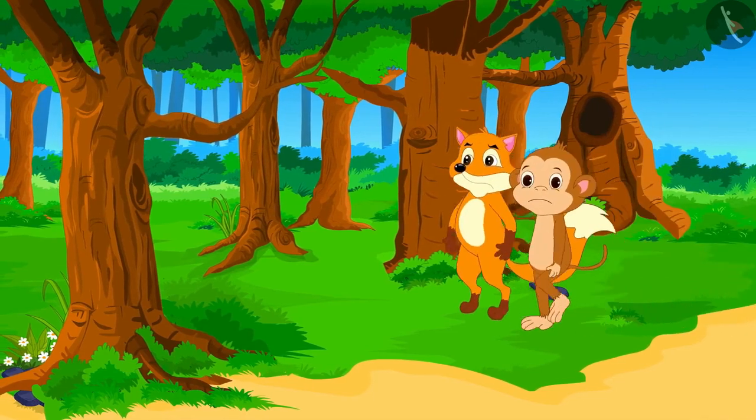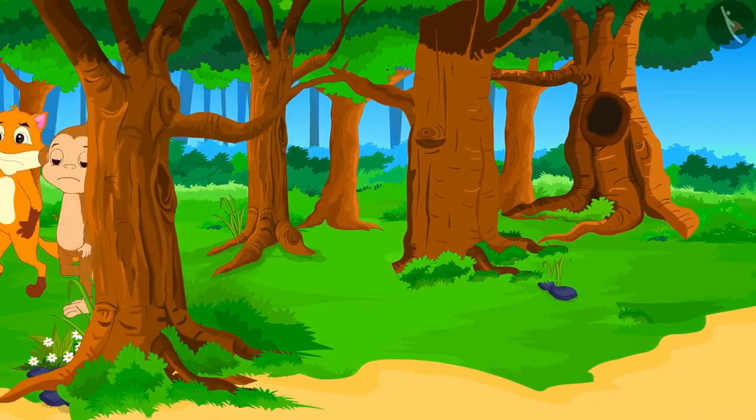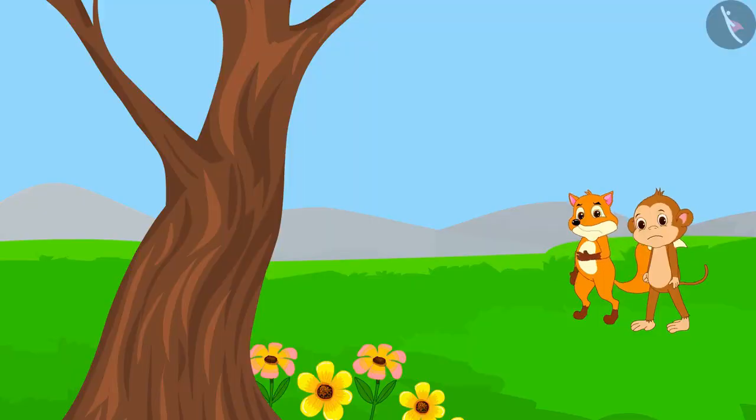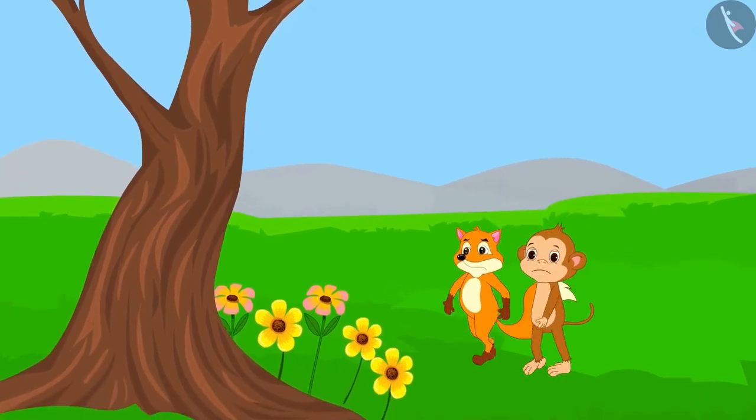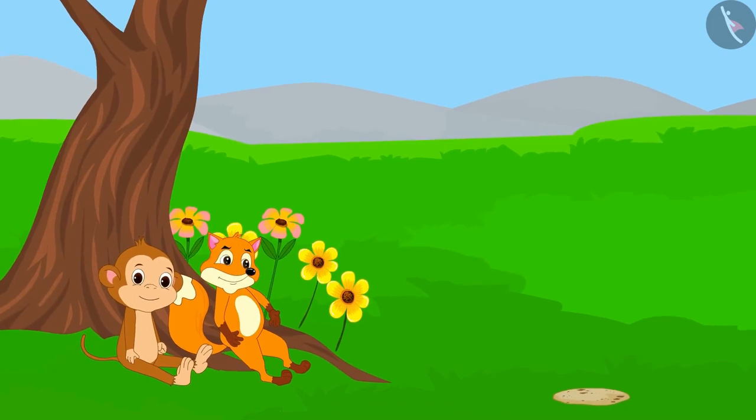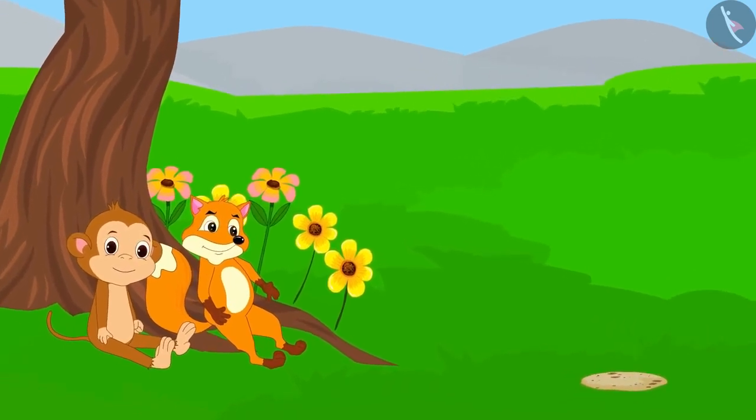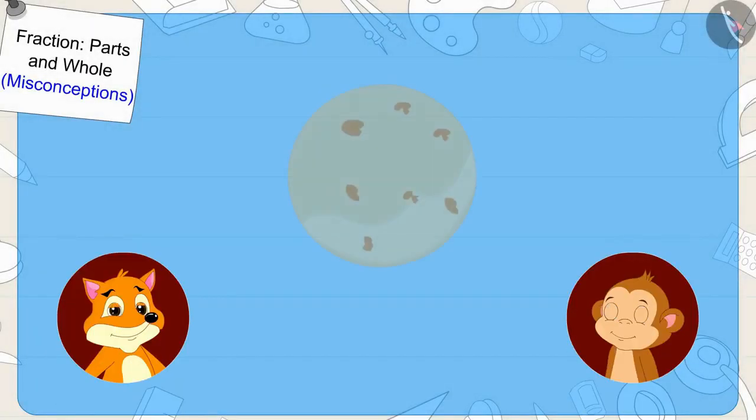One day, Babban and the Fox got lost in the forest. They had wandered a lot but could not find anything to eat. Both of them got tired and sat in the shade of a tree. Just then, they found a chapati there. Both of them became very happy.